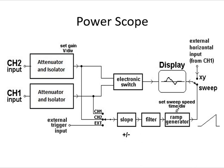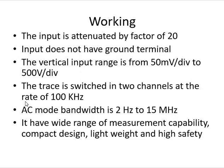For exam questions on the block diagram and working principle of the power scope, draw the diagram and explain these key points: the input is attenuated by a factor of 20; there is no ground terminal as in a conventional oscilloscope; vertical input range is 50 mV per division to 500 V per division; the trace is switched between two channels at 100 kHz; AC mode bandwidth is 2 Hz to 15 MHz; and it has wide range of measurement, compact design, lightweight, and high safety.